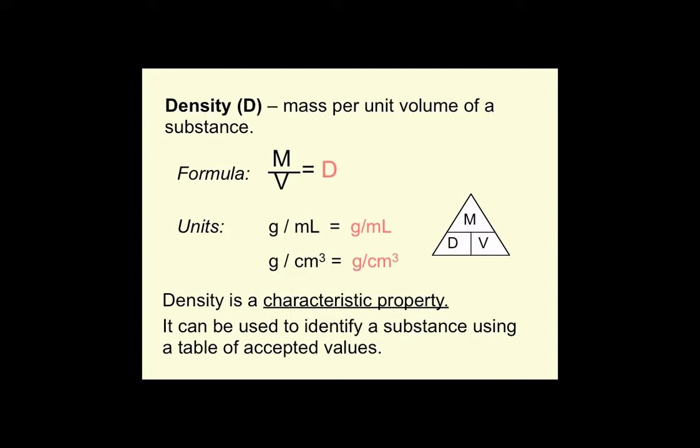Density is what we call a characteristic property. That means that we can use density to figure out what something is. So if you have a lump of metal, and it looks kind of shiny and kind of goldish, but you're not really sure if it's actually gold, well, the material gold has a particular density. Whether it's a great big chunk of gold or a little tiny chunk of gold, its density will be the same. So if you want to find out if the chunk of metal you have is actually gold, find its mass, find its volume, calculate its density, and then see if your chunk of material has the same density as actual gold.